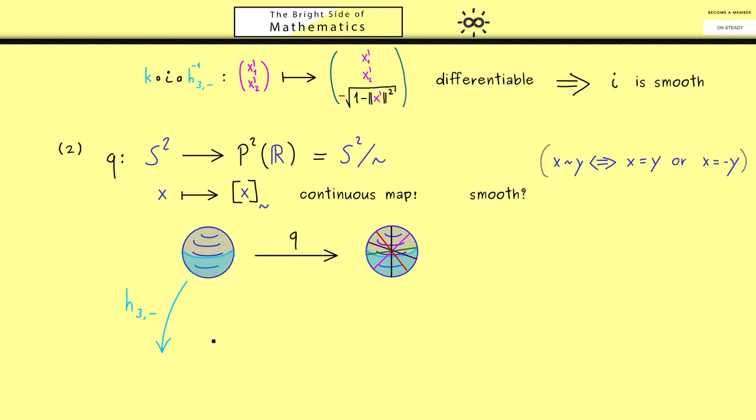To answer this question we have to do the same as before, so we have to consider charts. Let's draw the picture, which means we have to visualize P² in some way. For this, please recall, the equivalence relation is given as x is equivalent to y if x is equal to y, or equal to the opposite, to minus y. This means for P² we just identify two points on the same line through the origin. So you see, it's not easy at all to visualize this manifold here. However, the important part for us here is that we have also charts here. Now, on the left-hand side I want to take the same as before, so h3 minus. And on the right-hand side we can take a chart as we have defined it in Part 11. And maybe we simply call it K here.